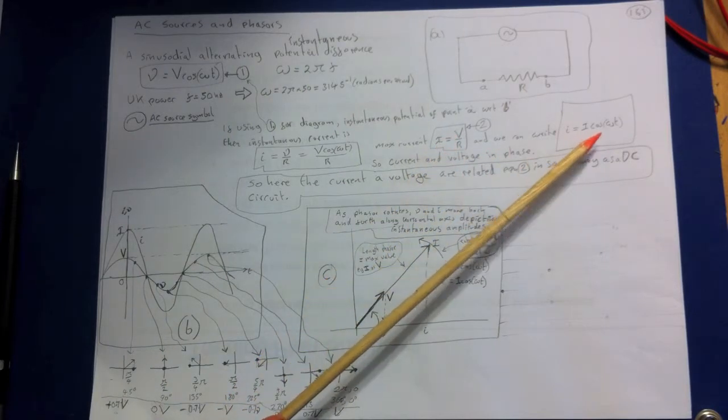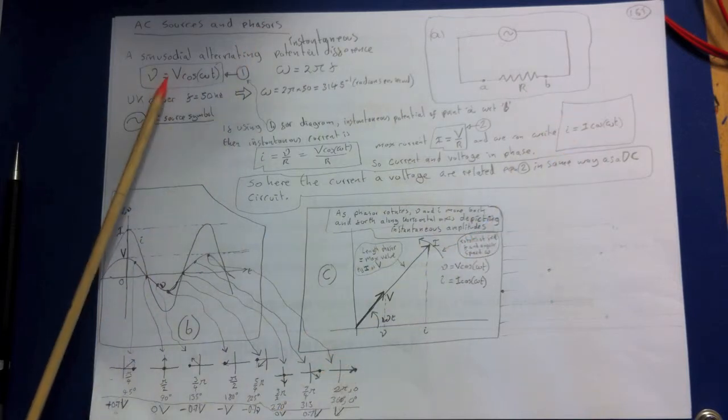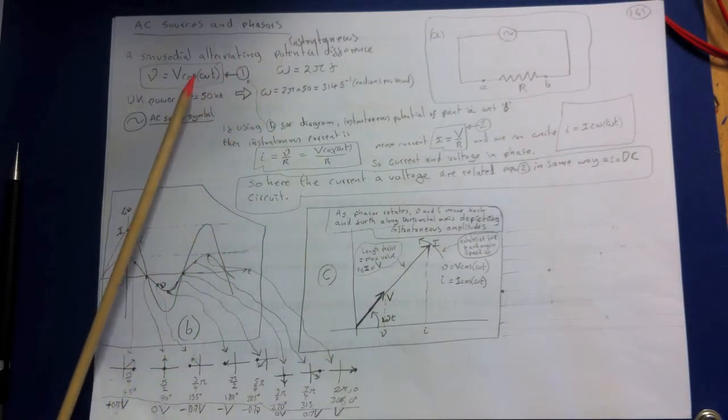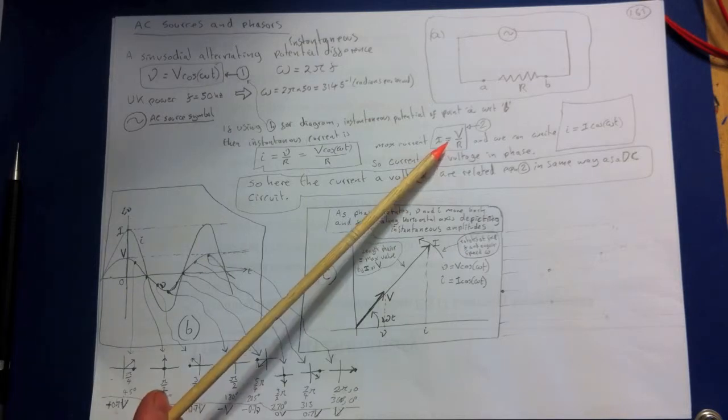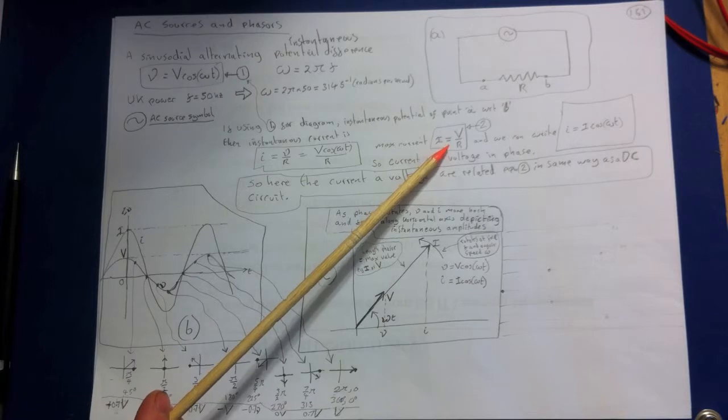So we've got an equation for the current and an equation for the voltage and you'll see that they're the same basically. They're both in terms of cosine omega t. The current and voltage are both proportional to cosine omega t so the current is in phase with the voltage. The current and voltage amplitudes are related in the same way as a DC circuit.